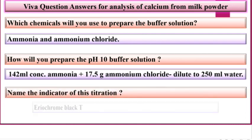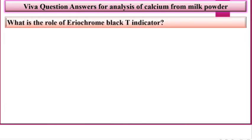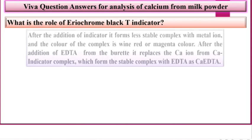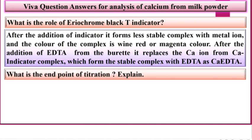Name the indicator of this titration. Eriochrome Black T indicator. What is the role of Eriochrome Black T indicator? After the addition of the indicator, it forms a less stable complex with the metal ion, and the color of the complex is wine red or magenta. After the addition of EDTA from the burette, it replaces the calcium ion from the calcium-indicator complex, forming the more stable complex CA-EDTA.